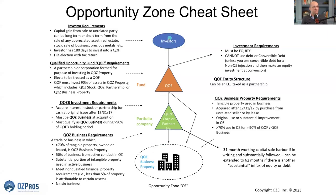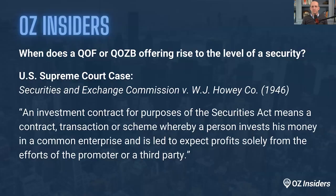Investors are incentivized to invest in OZ deals through Section 1400Z, which outlines the Opportunity Zone tax incentive. Investors who trigger capital gains are highly incentivized to invest into these deals. They have to do so through a QOF — a Qualified Opportunity Fund. That fund then holds a portfolio company, a QOZB, which then holds the actual assets — the deal or portfolio of deals you want to raise equity for. A large part of what we're discussing today pertains to securities law implications on you personally and on your fund.